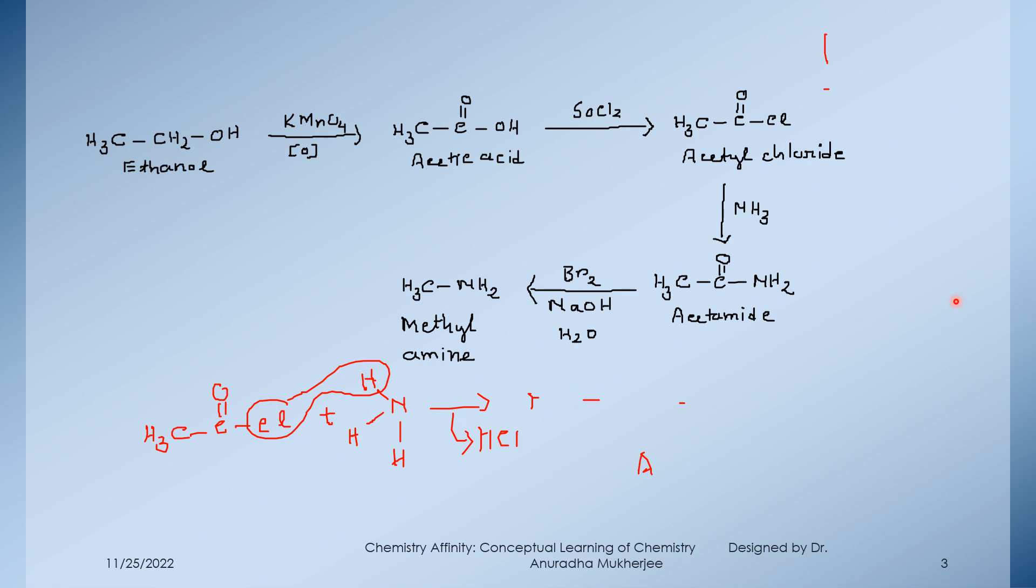Because in this reaction here, you can see one carbon is degraded. Like number of carbon atoms are less from the starting material. So this is the way we can get ethanol to ethyl amine.